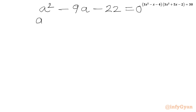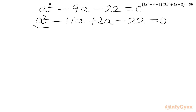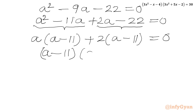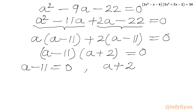We can use the method of factorization. We split -9a as -11a + 2a: so a² - 11a + 2a - 22 = 0. Taking a common from the first two terms: a(a - 11), and taking +2 common from the last two terms: +2(a - 11) = 0. So (a - 11)(a + 2) = 0.